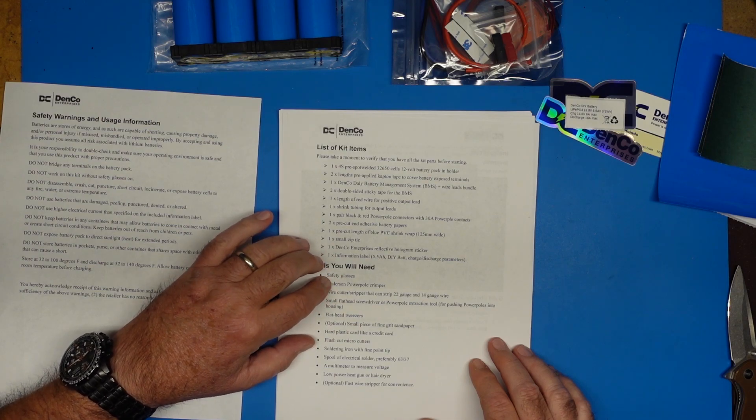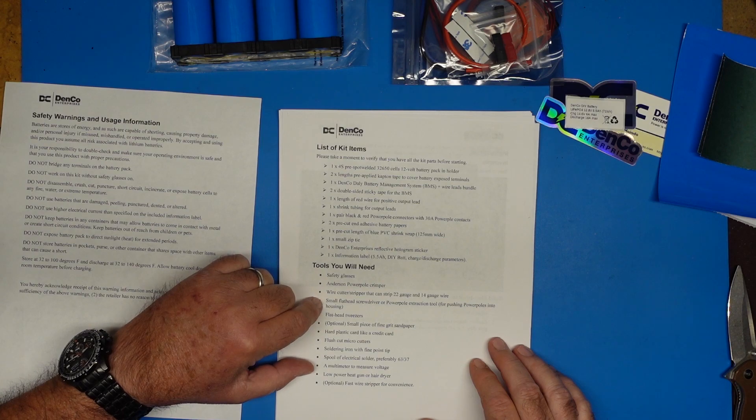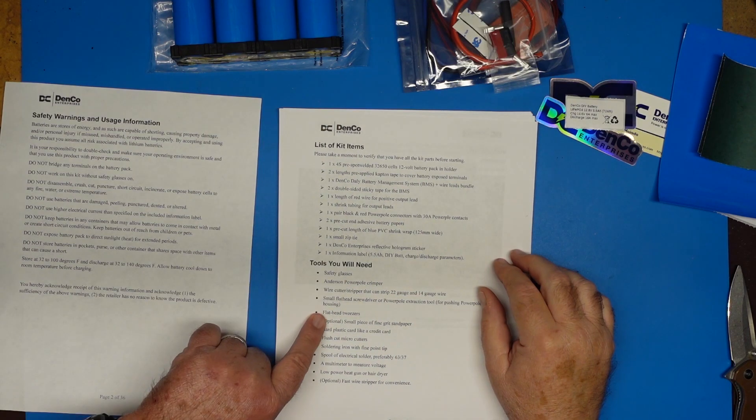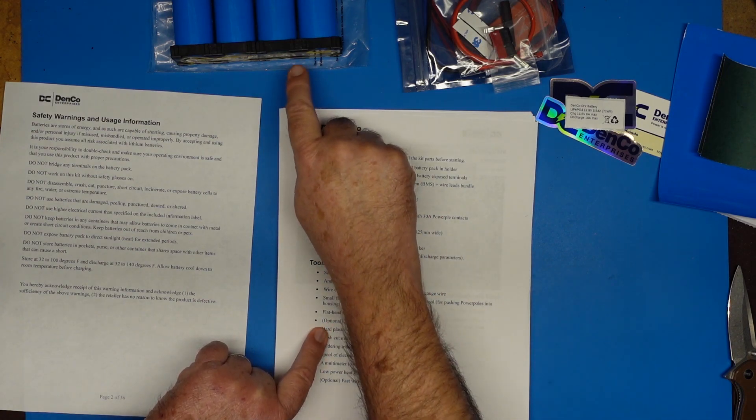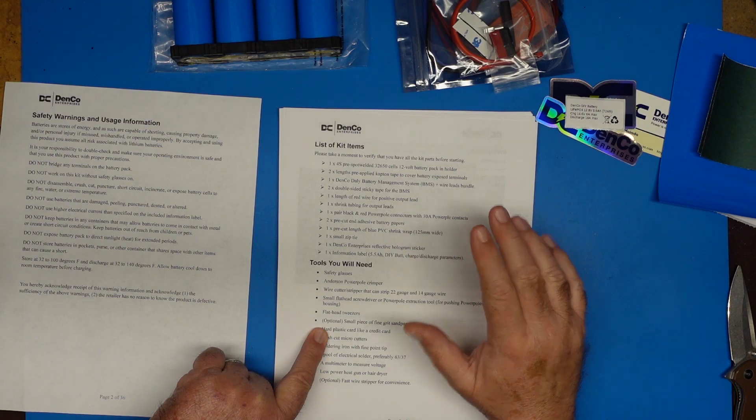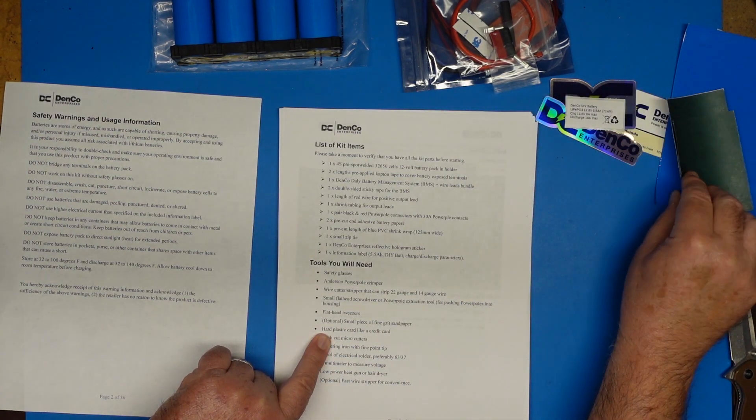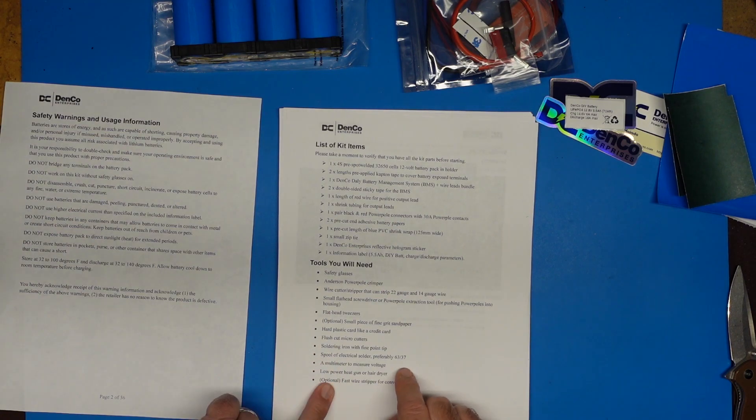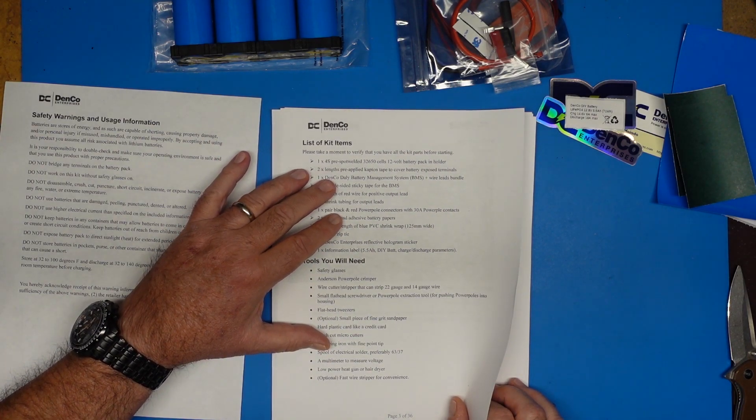And then we have a list of tools required. You're going to need to be able to crimp power pole connectors. A wire cutter stripper. Small flathead screwdriver or that weird little power pole connector tool. We might need some small flathead tweezers. Fine grit sandpaper. That's to shine up those nickel strips so we can apply solder better. A hard plastic card. That's going to be to get a good crease on our tape when we fold it over. Micro cutters. A soldering iron solder. A heat gun or hair dryer. There's all the gear you're going to need. You may want to set it out beforehand.